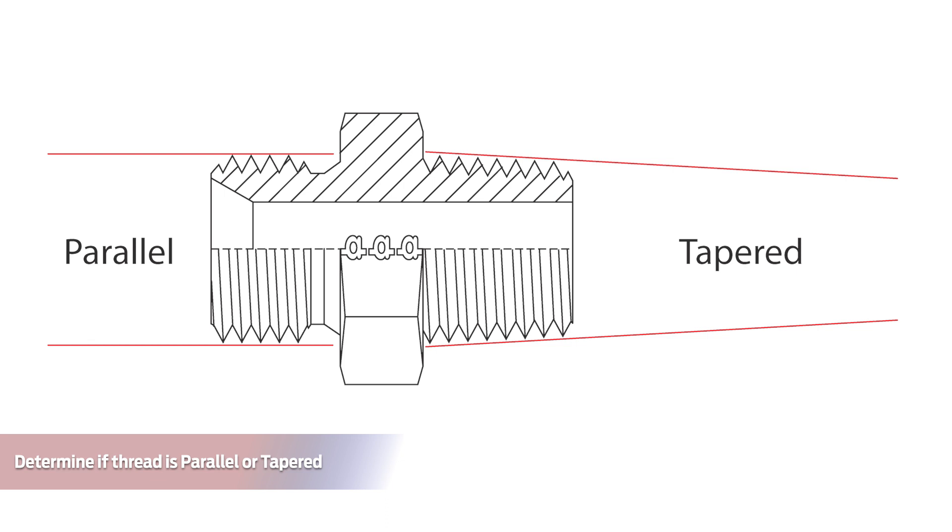If the thread surface planes continue forever without intersecting, the thread is parallel. If the thread planes do intersect, then the thread is tapered.